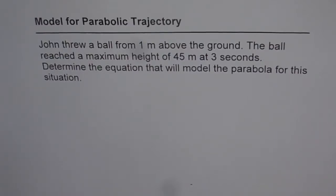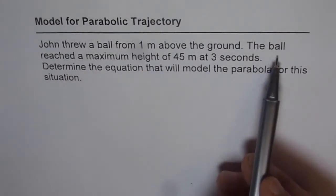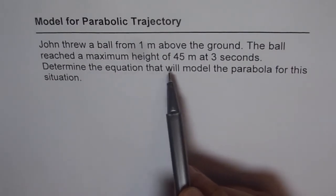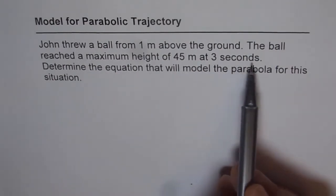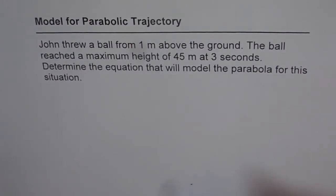Here is a real-life situation and we'll model for a parabolic trajectory. John threw a ball from one meter above the ground. The ball reached a maximum height of 45 meters at three seconds. Determine the equation that will model the parabola for this situation.